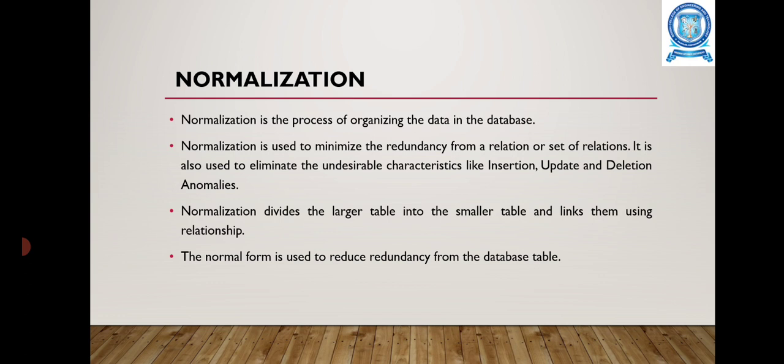Normalization is a process of organizing the data in the database. It is used to minimize the redundancy from a relation or set of relations. It is also used to eliminate undesirable characteristics like insertion, update and deletion anomalies. Normalization divides the larger table into smaller tables and links them using relationships. The normal form is used to reduce redundancy from the database table.